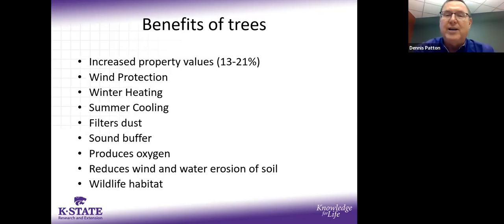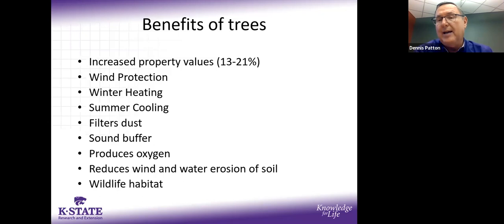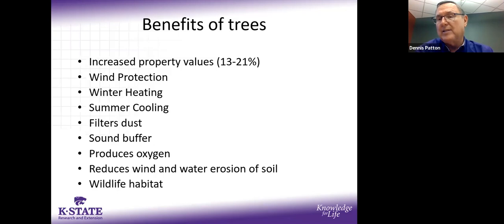Trees help with water and soil erosion — a tree canopy slows rainfall to the ground, helping with flash flooding. And of course there's the wildlife habitat: the songbirds, insects, and everything that makes a healthy environment. Not all trees are created equal for wildlife. Native trees host more insects and native wildlife than exotic or Asian-origin trees.